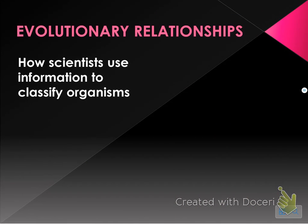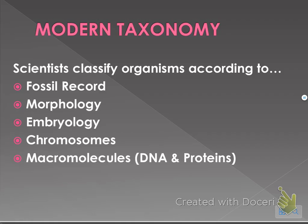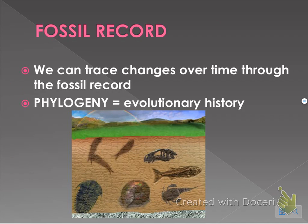Evolutionary relationships are a mini taste of the evolution unit, thrown in with classification. Modern taxonomy uses Linnaeus' system but includes additional kingdoms and organizes organisms in the context of evolution. There are five major ways scientists classify organisms that you need to know. First is the fossil record — you can trace fossils back to an early ancestor. A key word to know is phylogeny, which is the evolutionary history of an organism.